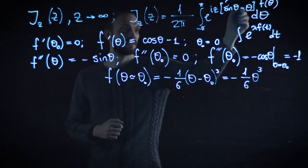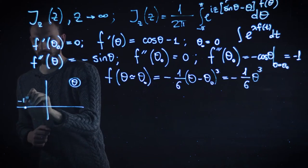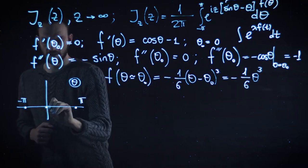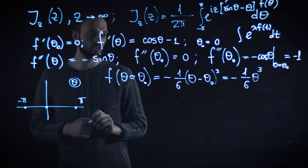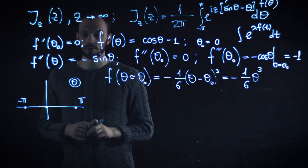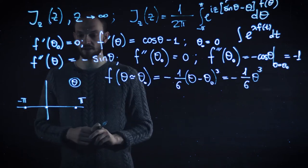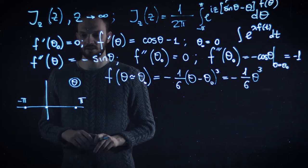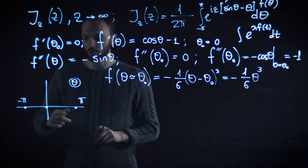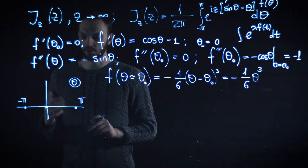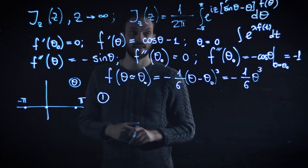Let us now analyze this expression. We are integrating in θ from minus π to π, and we have identified a stationary point in the middle of this interval. Before proceeding, we need to realize which contribution is more dominant. Notice that this integral also has contributions from the endpoints. Similar to what we have seen on the real axis, we need to convince ourselves that the contribution of the endpoints is smaller than that of the stationary point. We will first estimate the stationary point contribution, then compare it with what we expect from the endpoints.